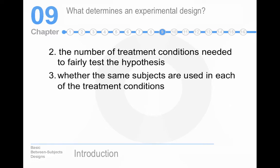The second consideration is the number of treatment conditions needed to fairly test the hypothesis. So we could do our Red Bull study with two conditions, which would be Red Bull versus water, or three conditions. We could give one group of people four Red Bulls, another group two Red Bulls, and a third group just two glasses of water. The more levels that you add, the more complicated your design becomes.